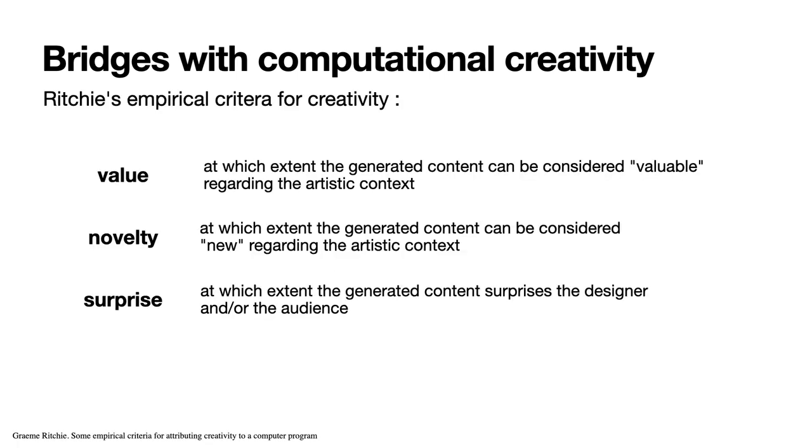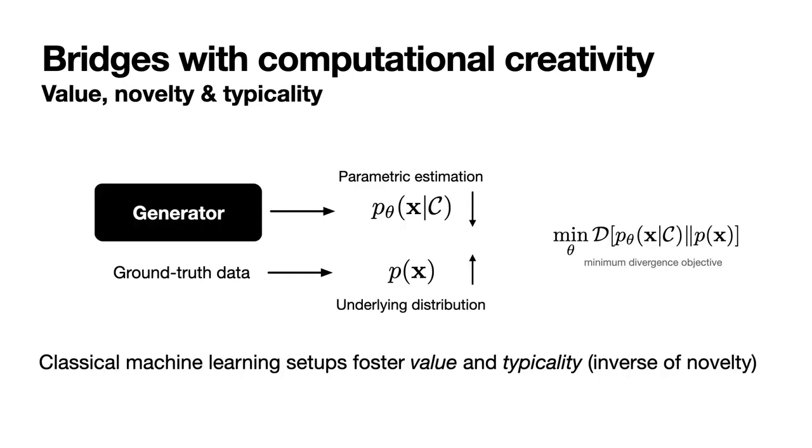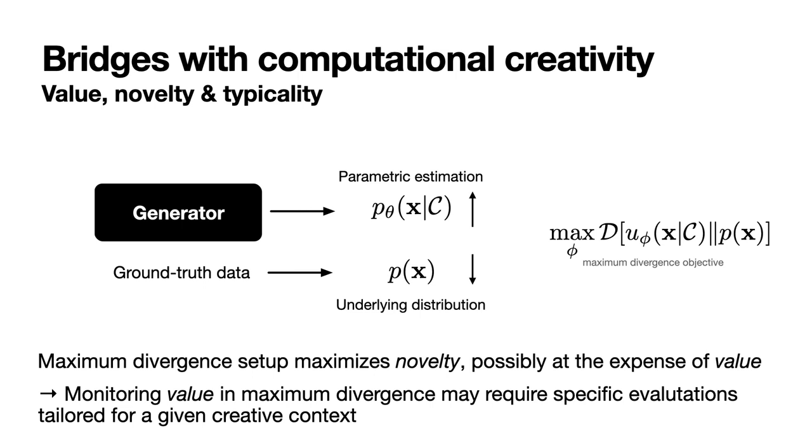Finally, we shall also discuss the Ritchie's empirical criteria for creativity: value, novelty, and surprise. Indeed, we can assess that classical machine learning optimization setups foster value and typicality, that is the inverse of novelty, because of the minimization of the divergence. Reversely, maximum divergence setup maximizes novelty, but possibly also at the expense of value. Hence, monitoring value in maximum divergence may require specific evaluations tailored for a given creative context.